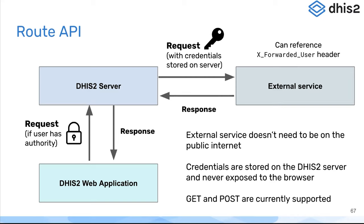Previously, before version 40, in order to access an external service, you had to either have that external service exposed to the public internet and then have the web browser talk to that external service directly, which opens up a lot of security and confidentiality issues that shouldn't strictly be necessary. So what is introduced in version 40 is the Route API. You can define a route which points from the DHIS2 server to an external service, and this can include credentials which are stored on the DHIS2 server, so they never need to be exposed to the browser or the DHIS2 web application.